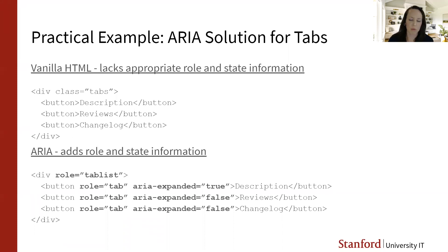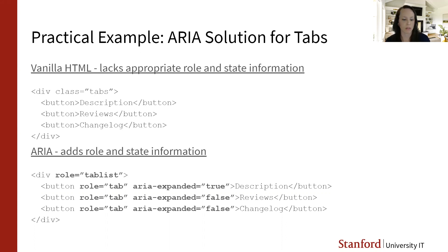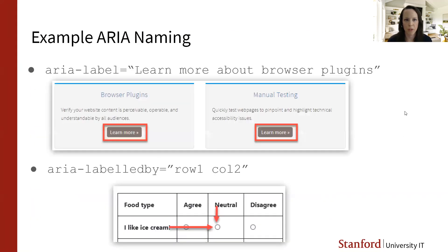This is where you bring ARIA in to assist. Instead of a plain div container, you give it role equals tab list, and each button gets role equals tab. You'd also add other attributes — I've added aria-expanded. On the first tab, aria-expanded equals true means you're currently viewing the description tab. When you click the reviews tab, aria-expanded equals true switches to that one and the other toggles to false. This starts giving the screen reader more information about what this content is and how to use it.